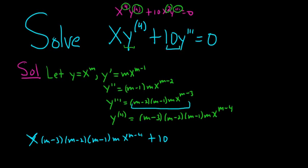And then we have the third derivative, which is here, because it's 10 and then the third derivative. So m minus 2, m minus 1, m, x to the m minus 3. And that's all equal to 0.